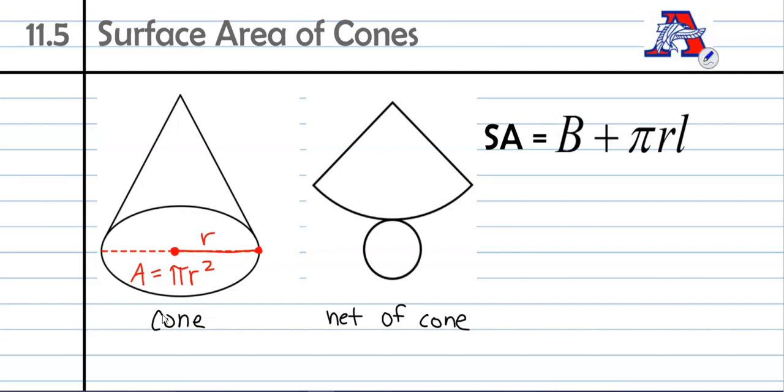We're also going to be using the slant height. Cones are kind of similar to pyramids - they're like a pyramid with a circle base. So we're still going to remember that L stands for slant height. You can see those same things on the net: here is your base and then your lateral area right here.